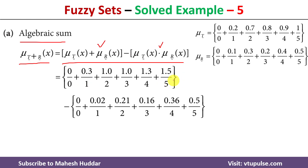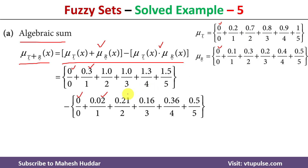This represents the sum of membership values of two fuzzy sets. For element 0, both cases have 0 as the membership value, so the answer is 0. For element 1, 0.2 and 0.1 — the addition is 0.3, and so on. Then we subtract the multiplication: 0 × 0 = 0; 0.2 × 0.1 = 0.02; 0.7 × 0.3 = 0.21, and so on.